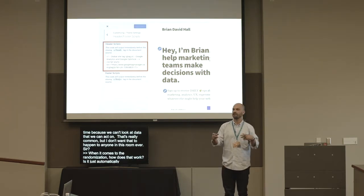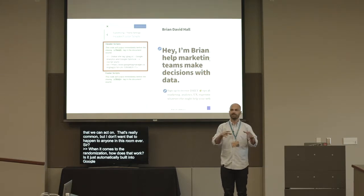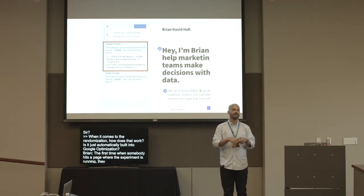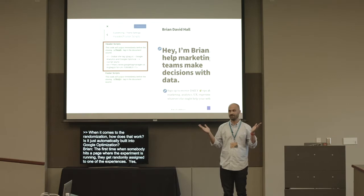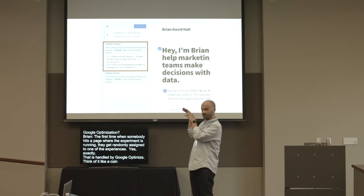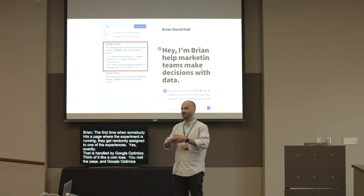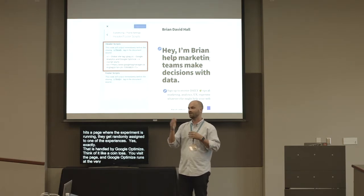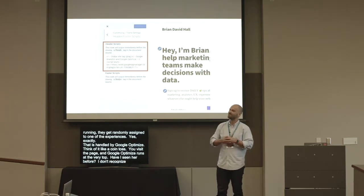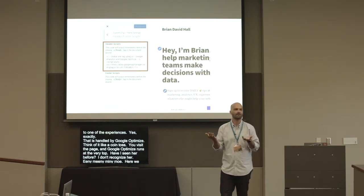The question is about the randomization. The first time somebody hits a page where an experiment is running, they get randomly assigned to one of the experiences — how does that work? That's handled by Google Optimize. Think of it like a coin toss. You visit the page and Google Optimize runs at the very top before you see anything. It's like: have I seen her before? Don't recognize her — eeny, meeny, miny, moe, I'm going to show you this one. And then it sets a cookie so the next time you come back, it's like, 'Oh, you again — here's the same one you saw last time.' That's how it works, and it's handled for you.